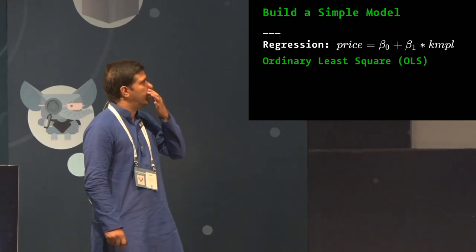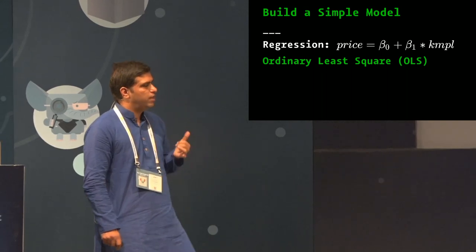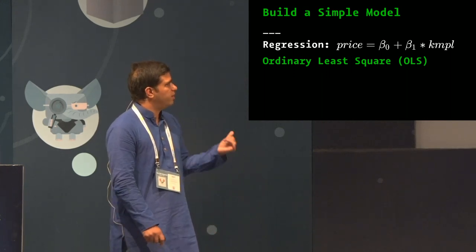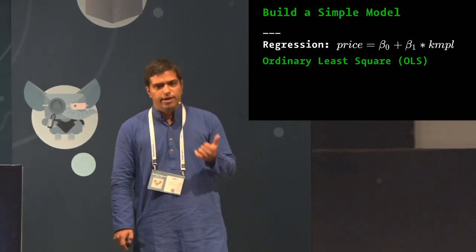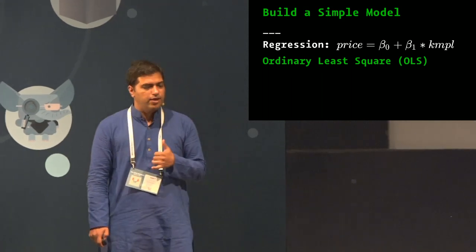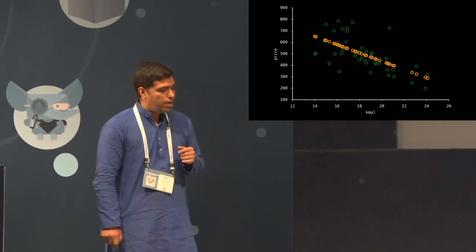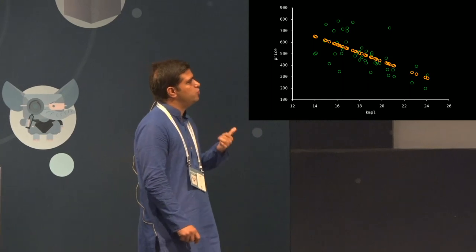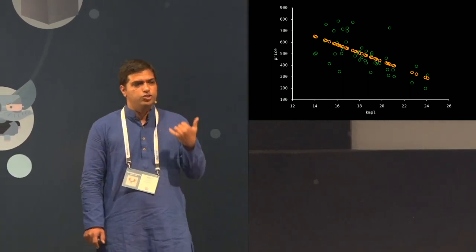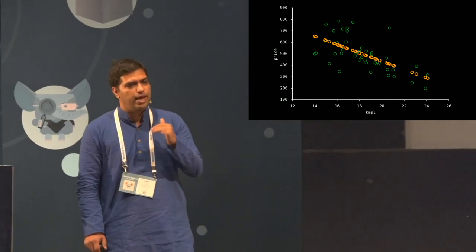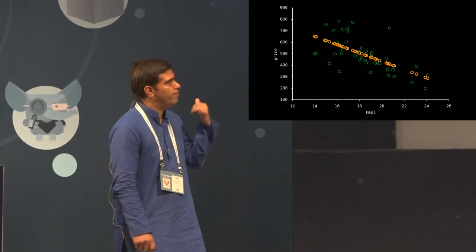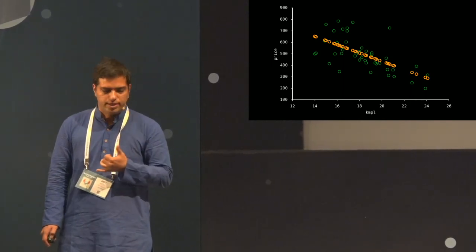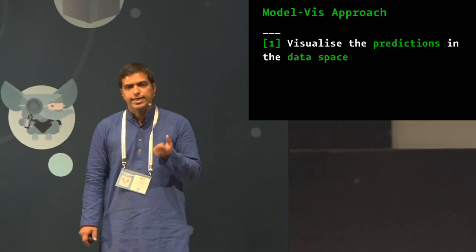The second step is to build a simple model. We'll take the simplest model in statistics or ML — ordinary least squares (OLS) linear regression. We regress price on kilometers per liter and see how the model looks. If you plot it, you get basically a line. I'm not literally using a line because when you translate this to two, three, four, five dimensions it may not be a line — it would be a plane, then a hyperplane. But in this case, we've plotted the predictions in the data space, which is the second key step.